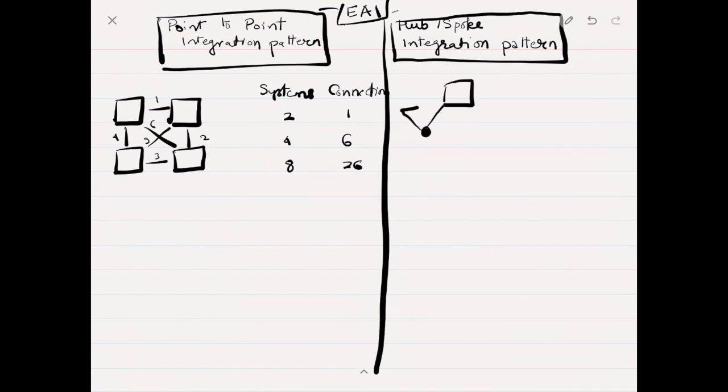Whereas in the hub-and-spoke, there's a hub and systems talk to the hub. The hub receives a message from system one and sends to system two. Initially, two systems have two connections, but as it scales, four systems will need four connections in hub-and-spoke, and eight systems will need eight connections.